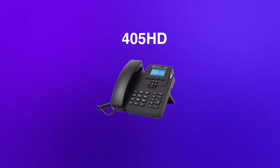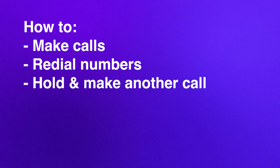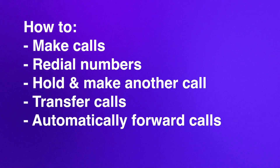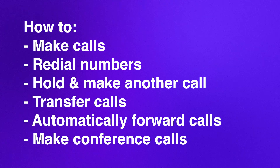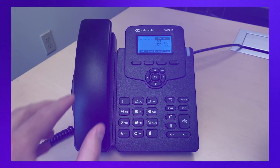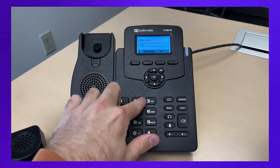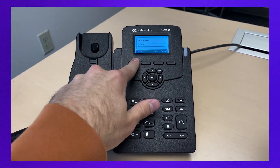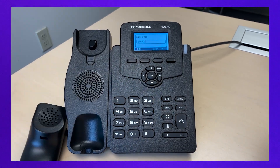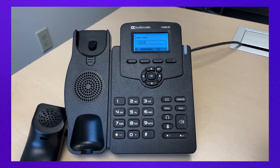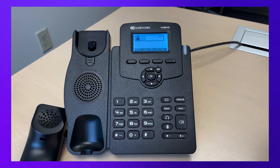We'll cover the basic features of the phone including how to make calls, redial numbers, put calls on hold and make another call, transfer calls, automatically forward calls to another number, and make a three-way conference call. To make a call, pick up the handset, enter the phone number, and press the dial soft key or OK button. If you do not press the soft key or OK button, the number will automatically be dialed after five seconds.